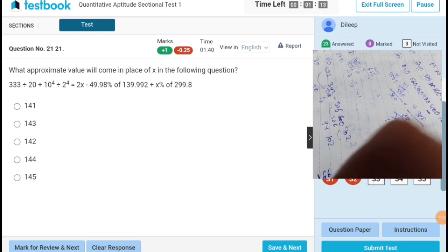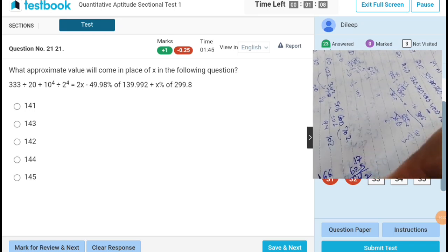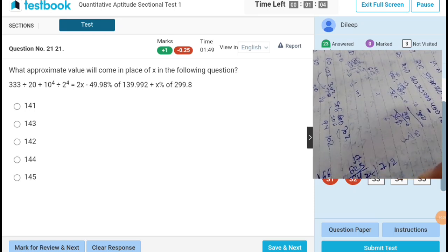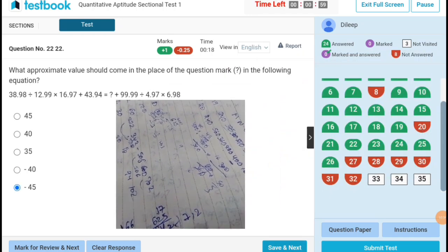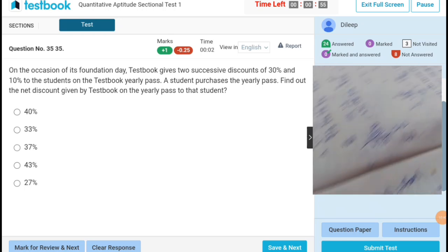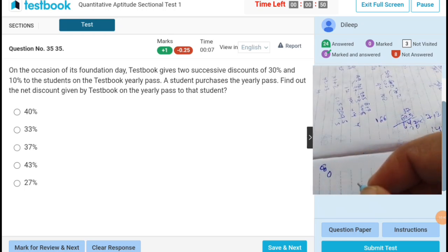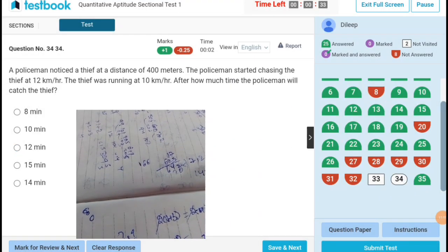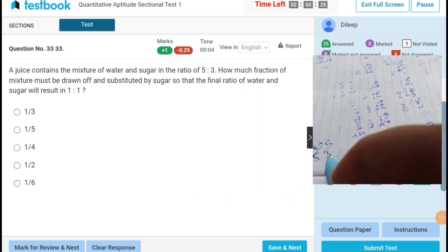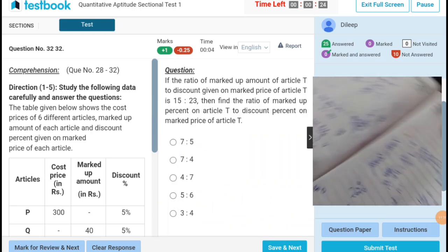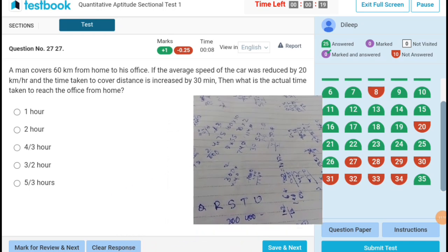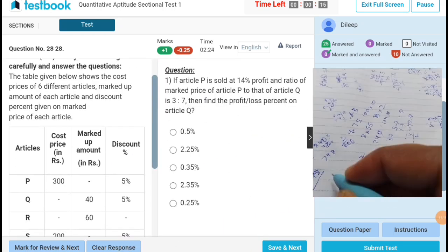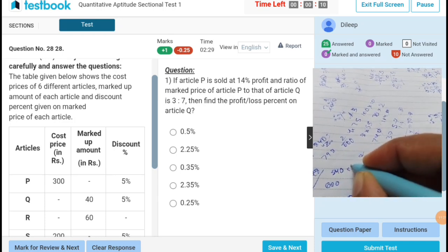17, 625, 17, 140. Next. On the occasion of its foundation, Textbook is giving two successive discounts. Yearly pass student purchase yearly pass, 37%. 425, 840, 625, 630.